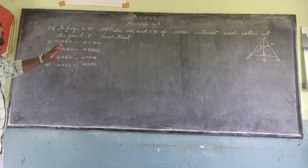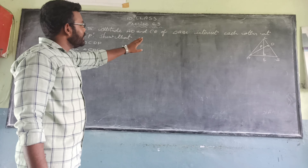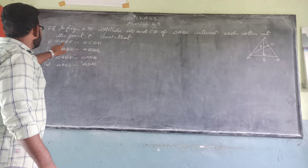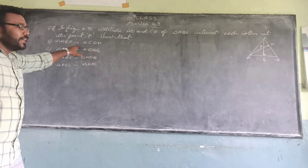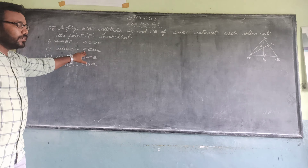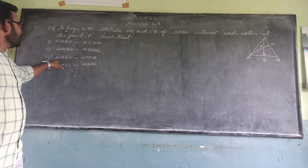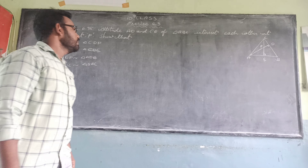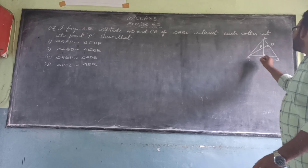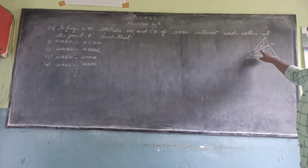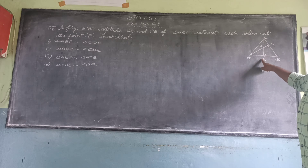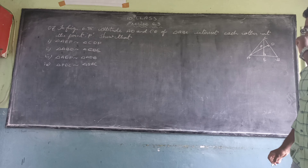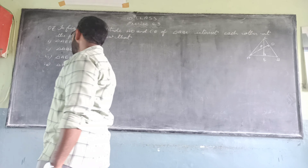The 7th question is: in figure 6.38, altitudes AD and CE of triangle ABC intersect each other at point P. We have to show that: triangle AEB is similar to triangle CDP, triangle ABD is similar to triangle CBE, triangle AEP is similar to triangle ADB, and triangle BDC is similar to triangle BEC.